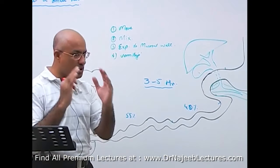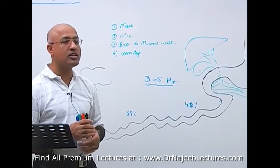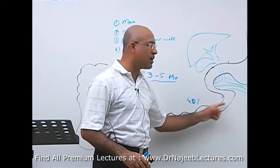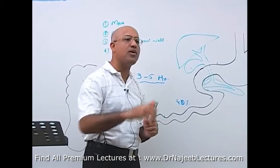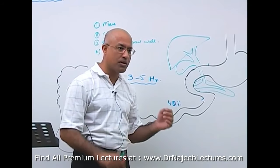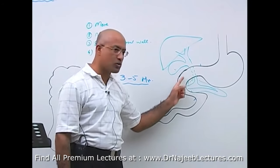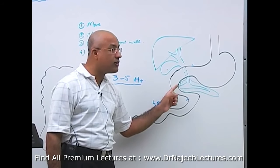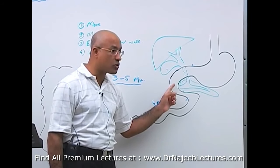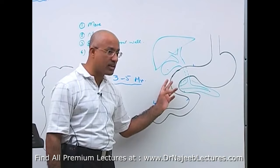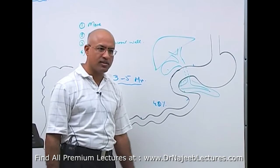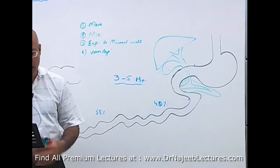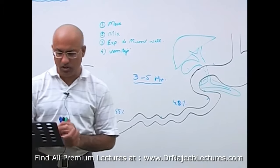The nutrient that can maximally slow down the movement of the small intestine is fat. When fat reaches the duodenum, it activates the release of cholecystokinin, and cholecystokinin can modulate small intestinal and gastric movement.